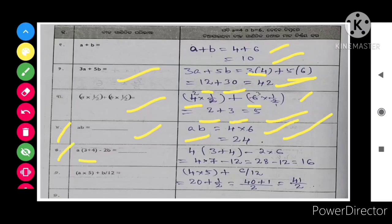Next, a into 3 plus 4 minus 2b. So a row value there is 4. So 4 into 3 plus 4 minus 2b means 2 into 6. So that is 4 into 3 plus 4 is 7. So 4 into 7 minus 12. So that is 28 minus 12 is equal to 16.